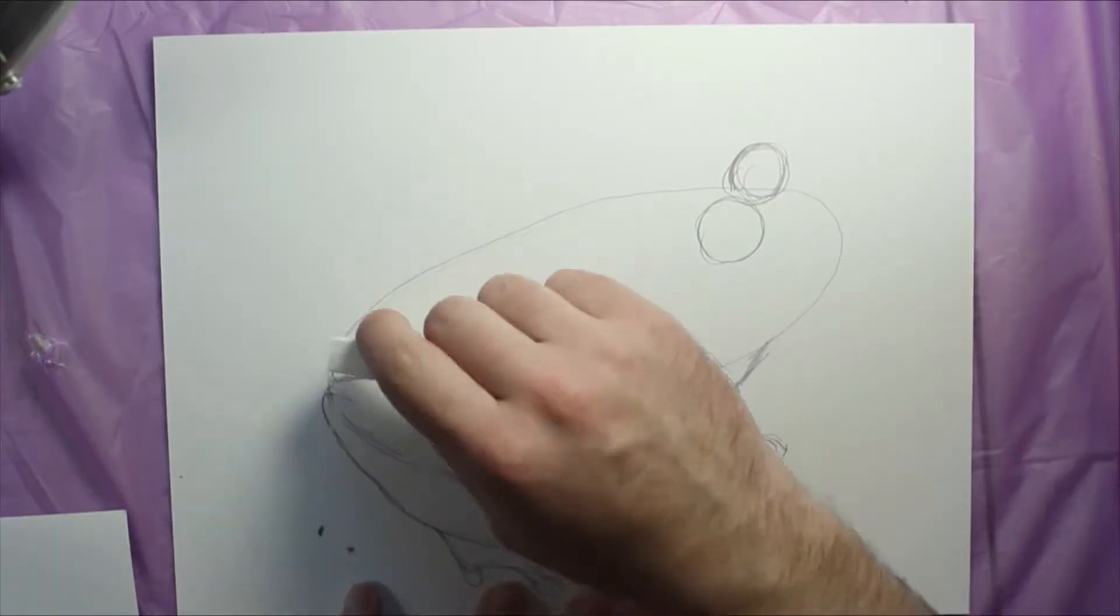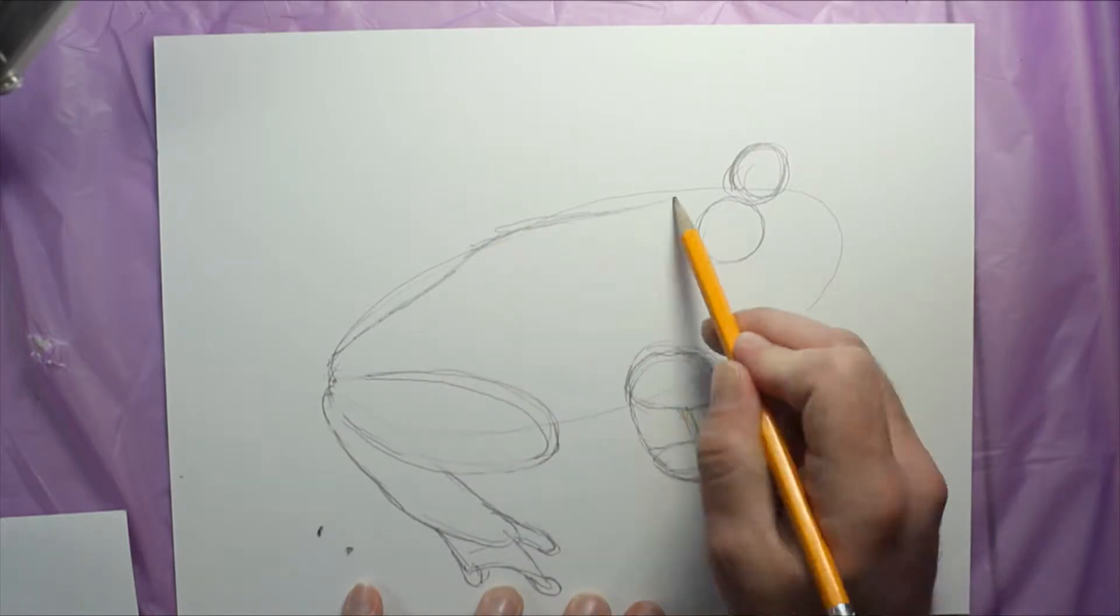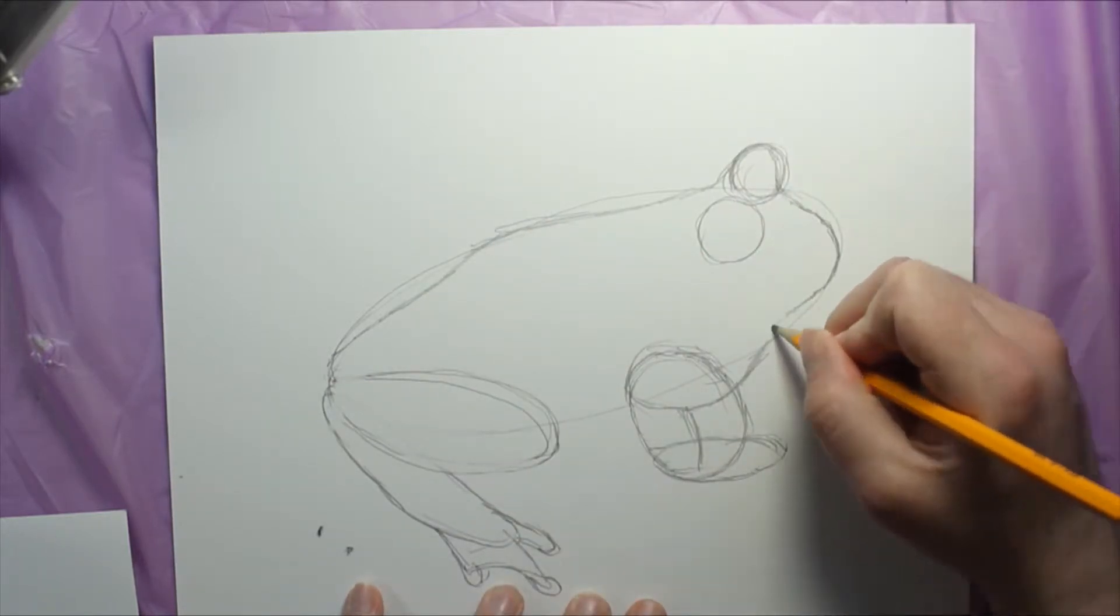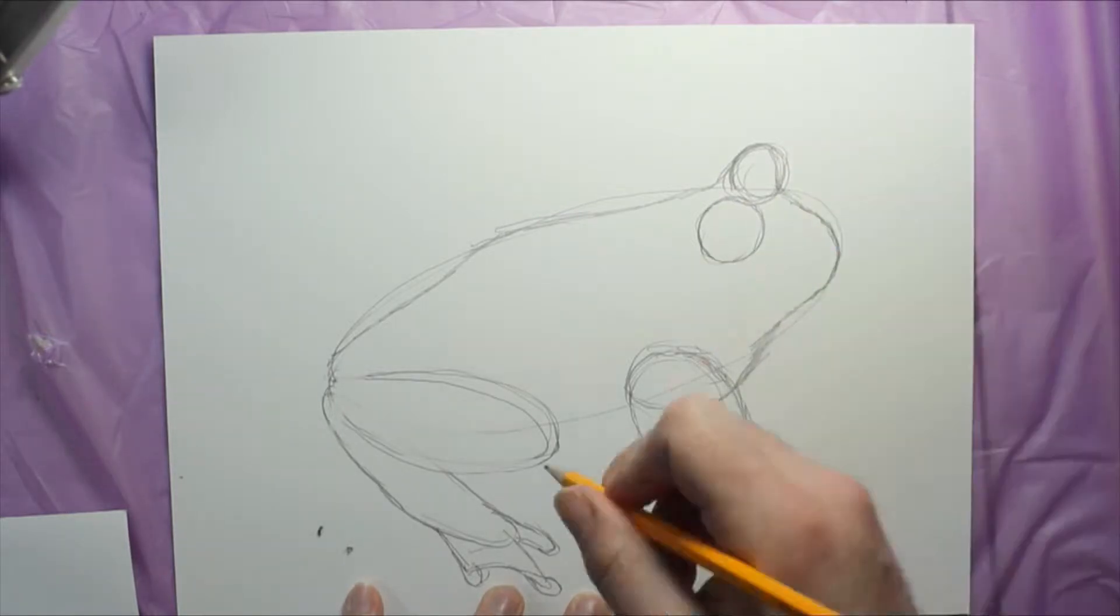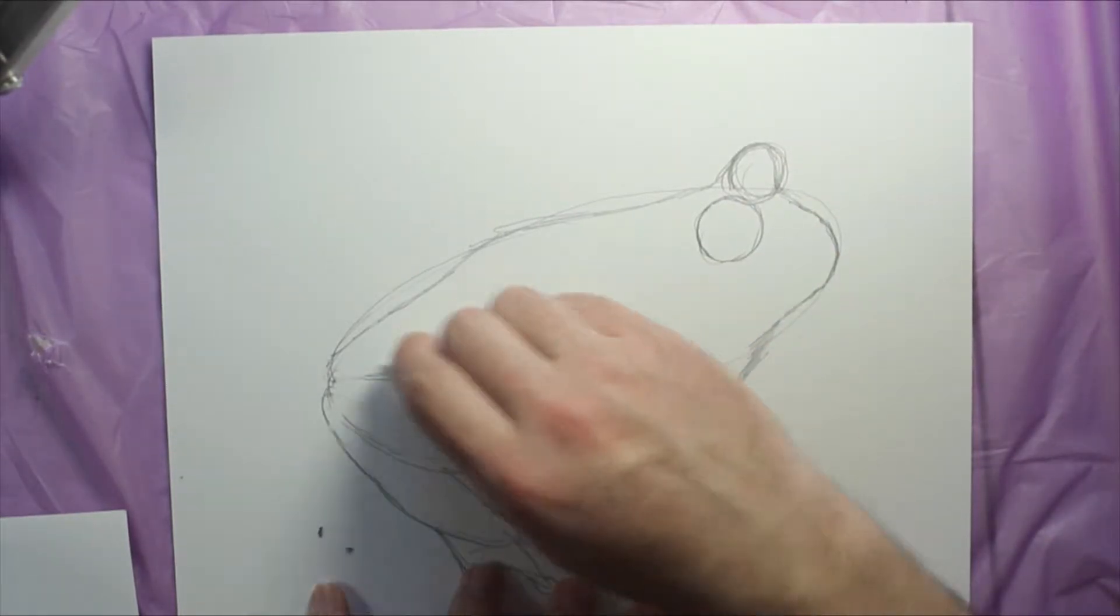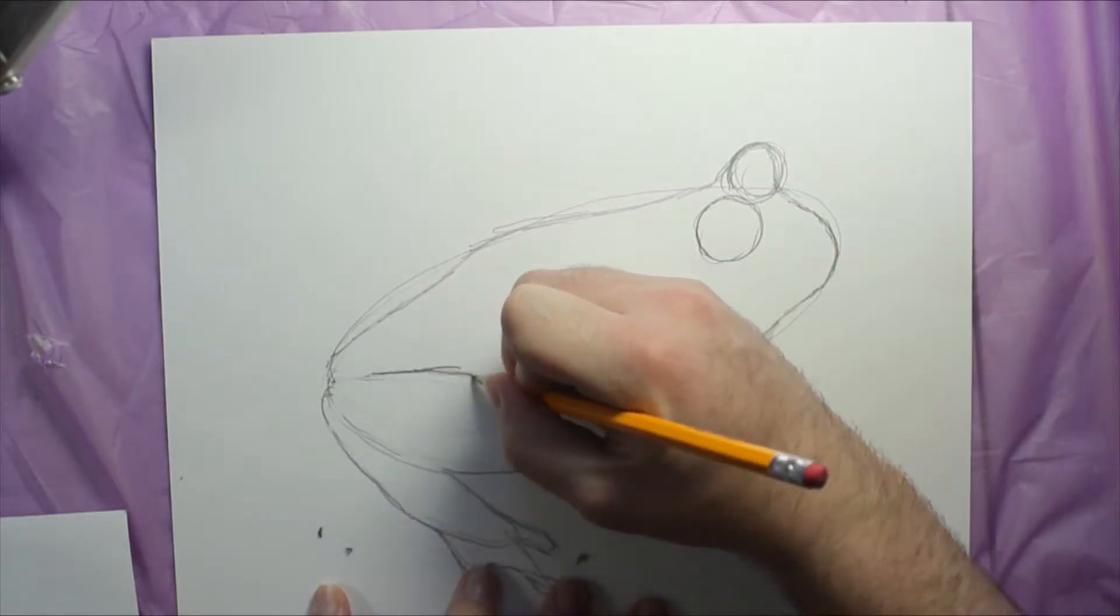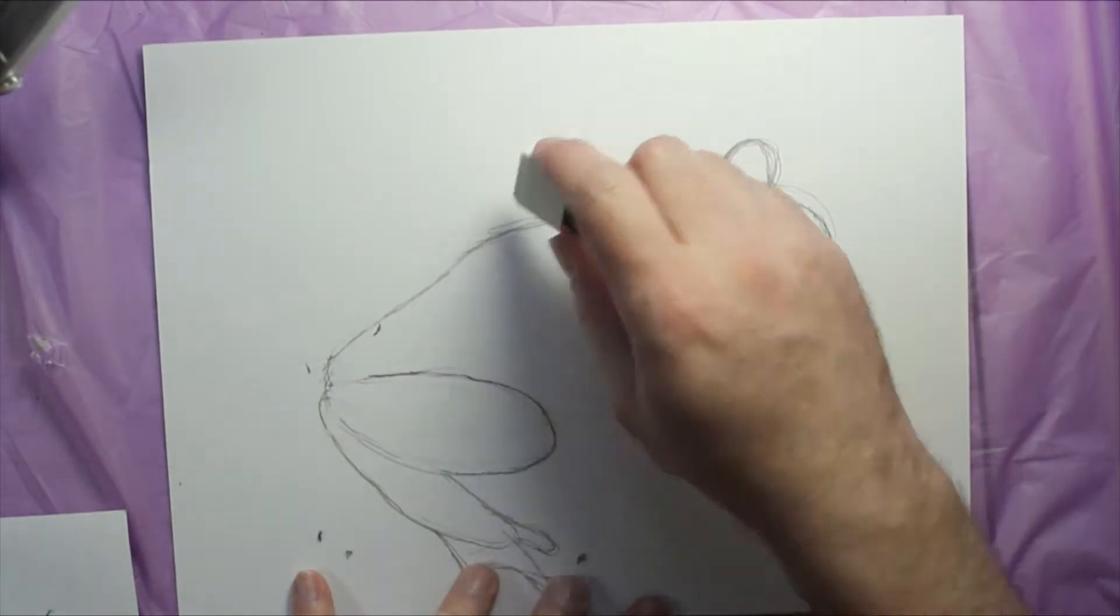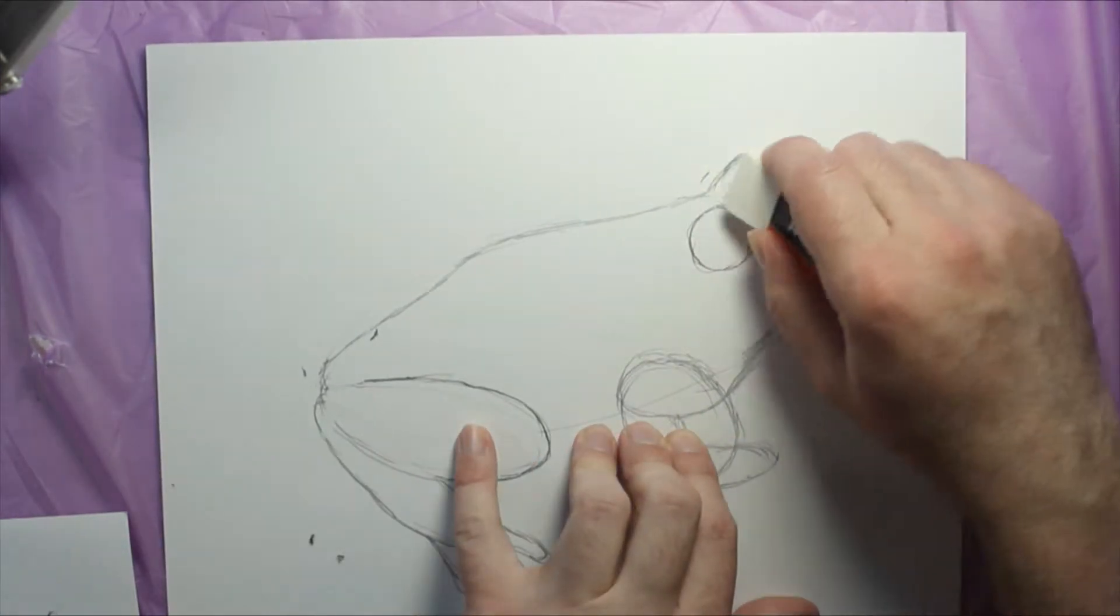Erase some of the lines that you drew before and start to work out the shape. You got the nose up there. I kind of added some variation to the back.